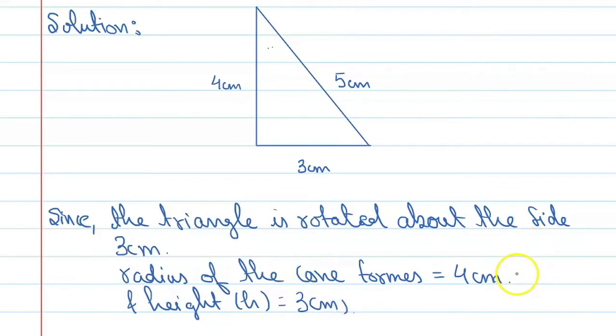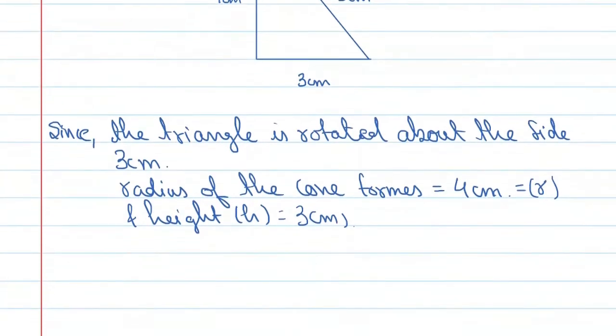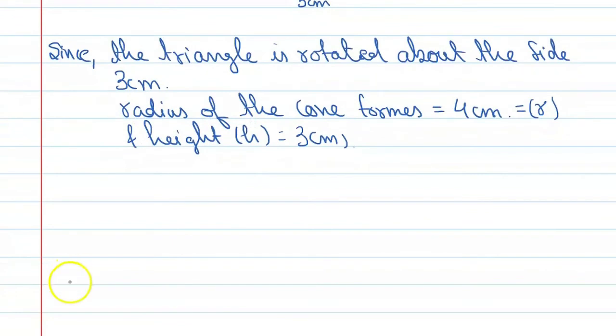So here we will represent the radius of the cone. Now the volume of the cone is 1 upon 3 pi r square h. All right, so we can see that volume is equal to 1 upon 3 pi r square h. Now put the values of this dimensions.